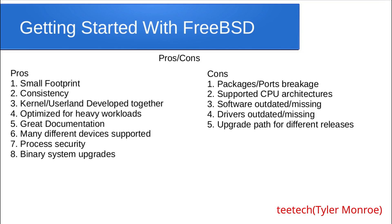Now the pros and cons of using FreeBSD — these are my personal opinion. Pros: first, it has a small footprint. The hardware requirements, even at the time of filming this in 2019, are 96 megabytes of RAM and about a gig of hard drive space — very small. Second is consistency: across all three CPU architectures, it's very consistent. You can install it on an SD card, a CF card, or a normal hard drive, and you have a very good, pristine, consistent environment.